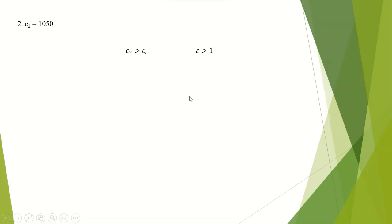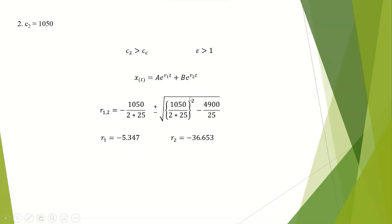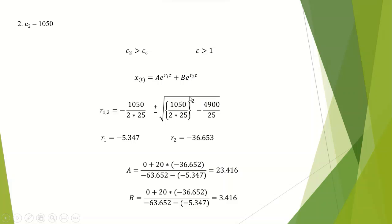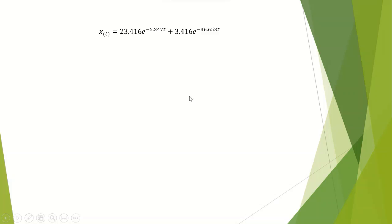For the second case, the damping constant is greater than the critical damping coefficient, so the system is overdamped. The displacement equation has the standard form for overdamped systems. After substituting, we find R1 equals minus 5.347 and R2 equals minus 36.652. Solving for A and B gives A equals 23.416 and B equals 3.416. So x as a function of time equals 23.416 e to the power of minus 5.347t, plus 3.416 e to the power of minus 36.652t.